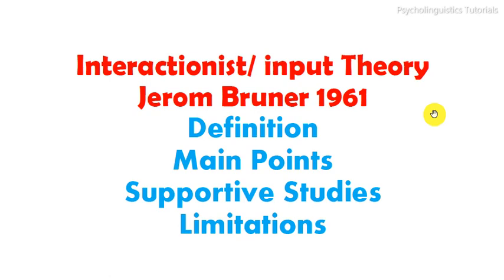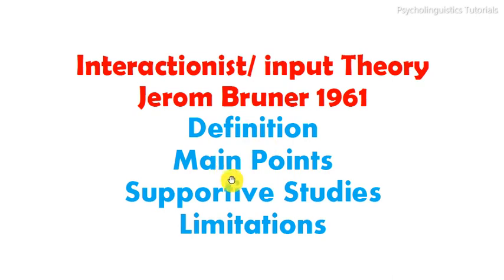We will discuss the interactionist theory of language acquisition. This theory was basically proposed by Jerome Bruner in 1961. First of all we will discuss its definition, then we will discuss its main points, then we will discuss the supportive studies of this theory, and at the end we will discuss some of the limitations of the interactionist theory of language acquisition.